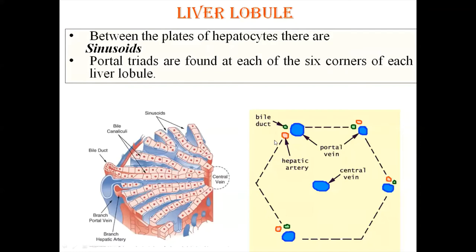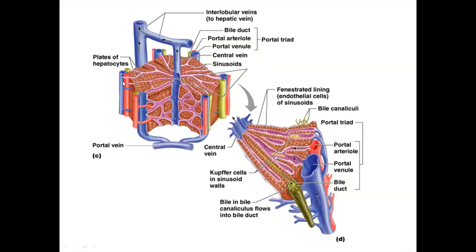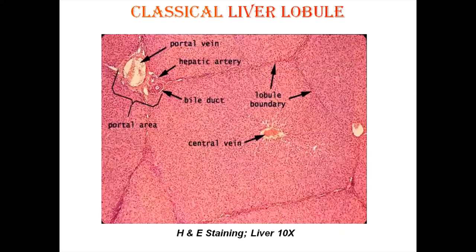At the six corners of the classical hepatic lobule we have portal triads. The sinusoids — shown in purple — open at the corners into three important structures: a branch of the hepatic artery, a branch of the portal vein, and a branch of the bile duct. The bile duct receives bile, while the artery and vein open into the sinusoids, which ultimately lead to the central vein occupying the center of the classical hepatic lobule.